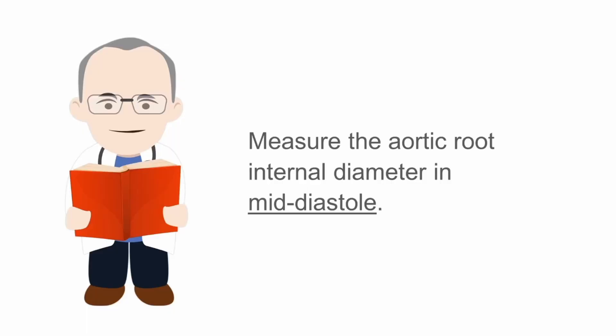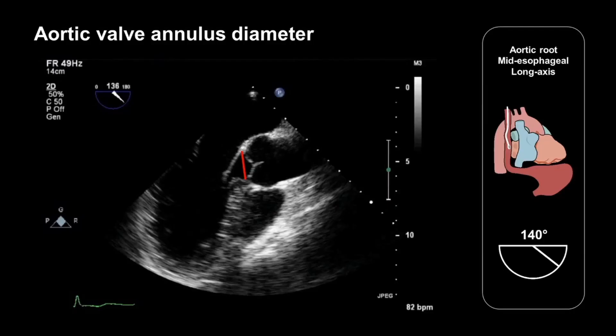As well as describing the appearance of the aortic root, we should also quantitate its dimensions by measuring its internal diameter in mid-diastole. We do so at several levels. The first diameter measurement that we make is at the aortic valve annulus level, where the normal diameter is between 2.0 and 3.1 centimetres.